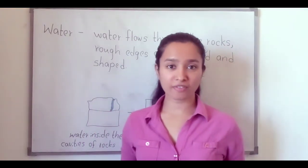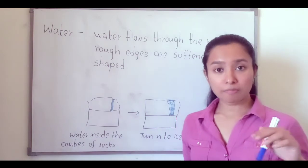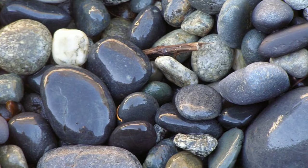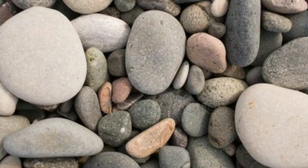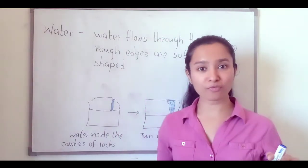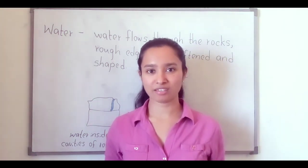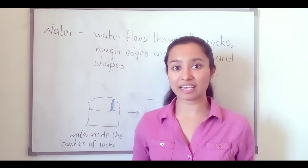How does water affect weathering? Water flows through the rocks, and because of this flowing, the rough edges of the rocks get smoothed and shaped. I think you have seen these stones near waterfalls and rivers — they have soft, beautiful shapes because of flowing water. This is a type of weathering.